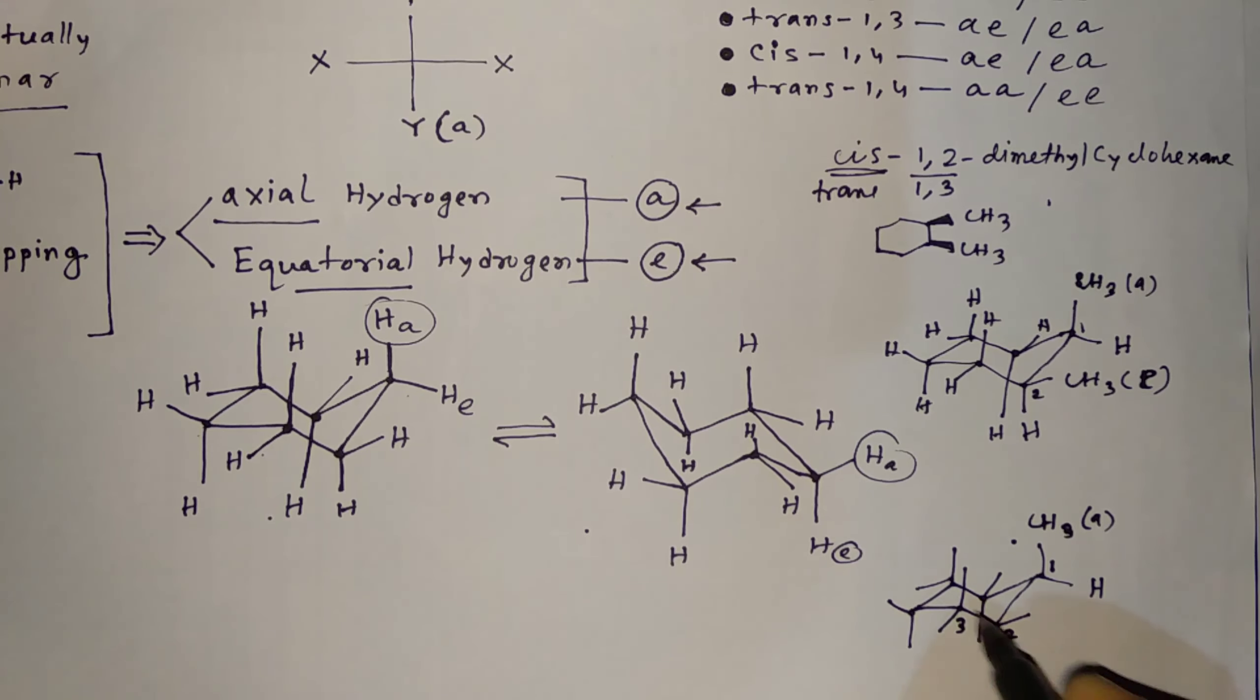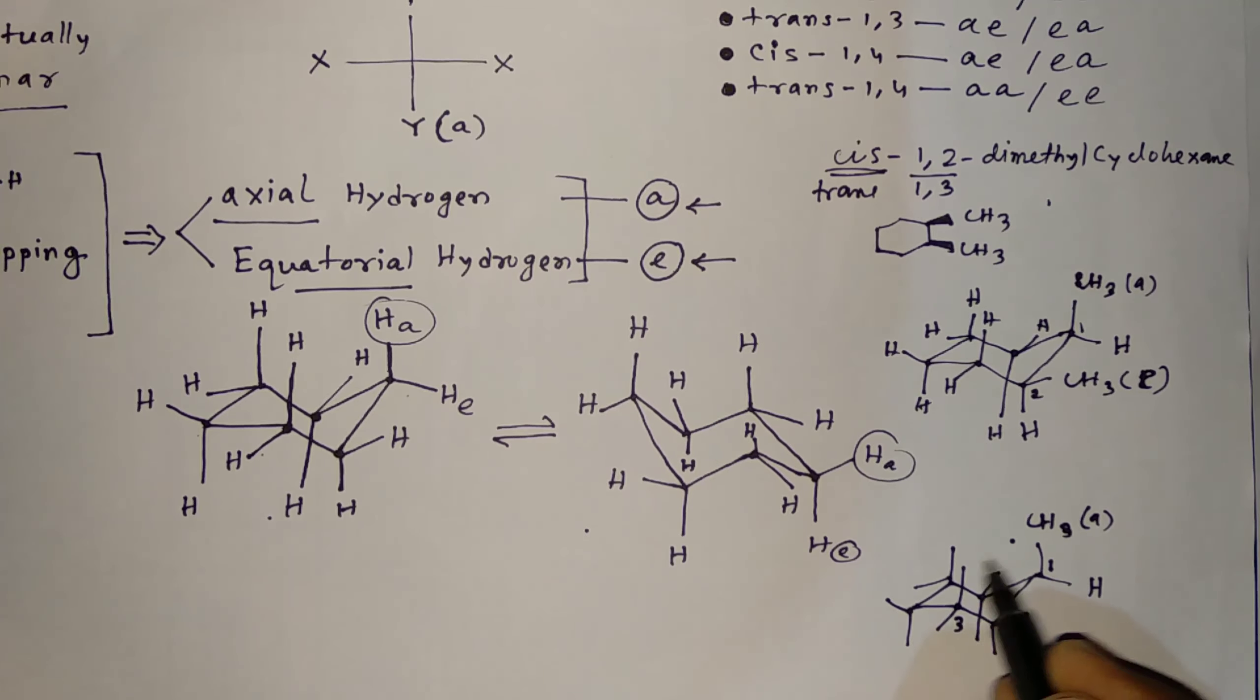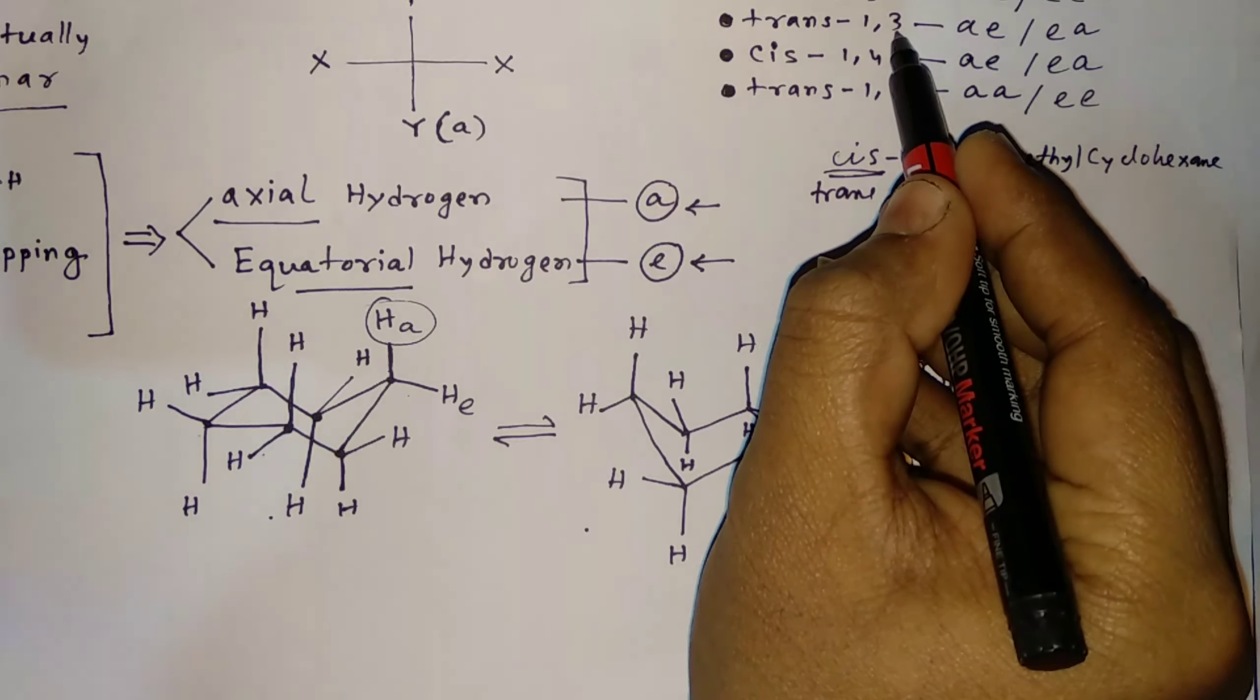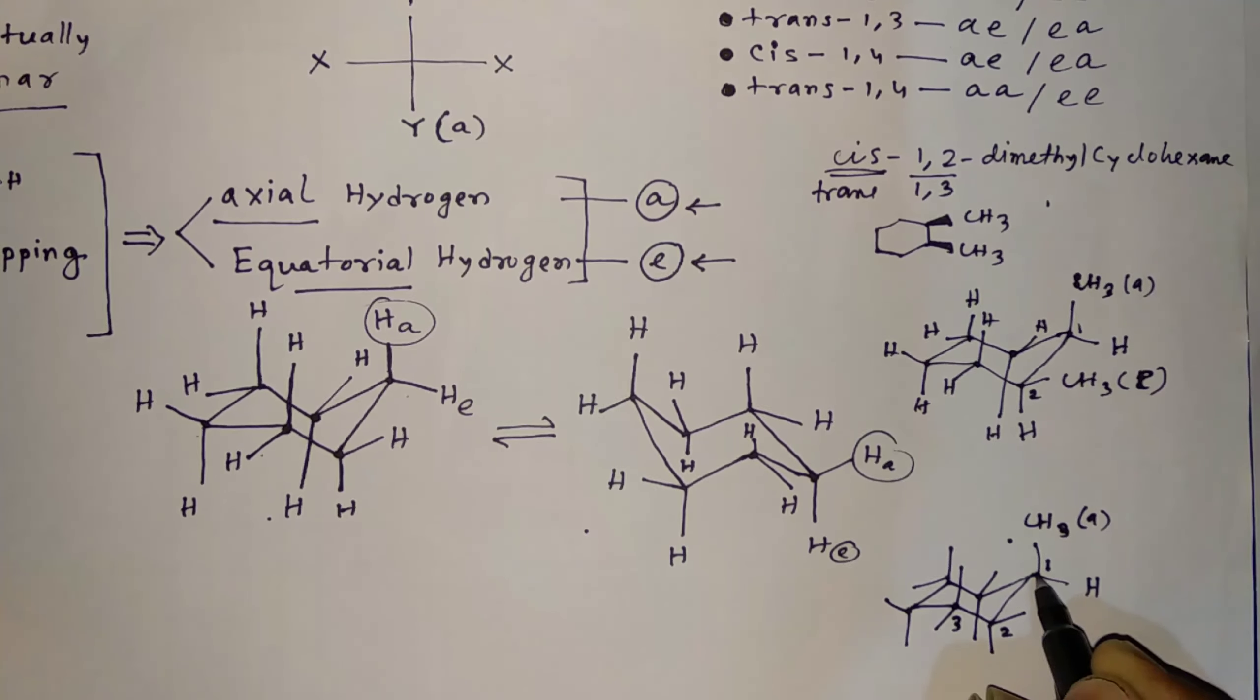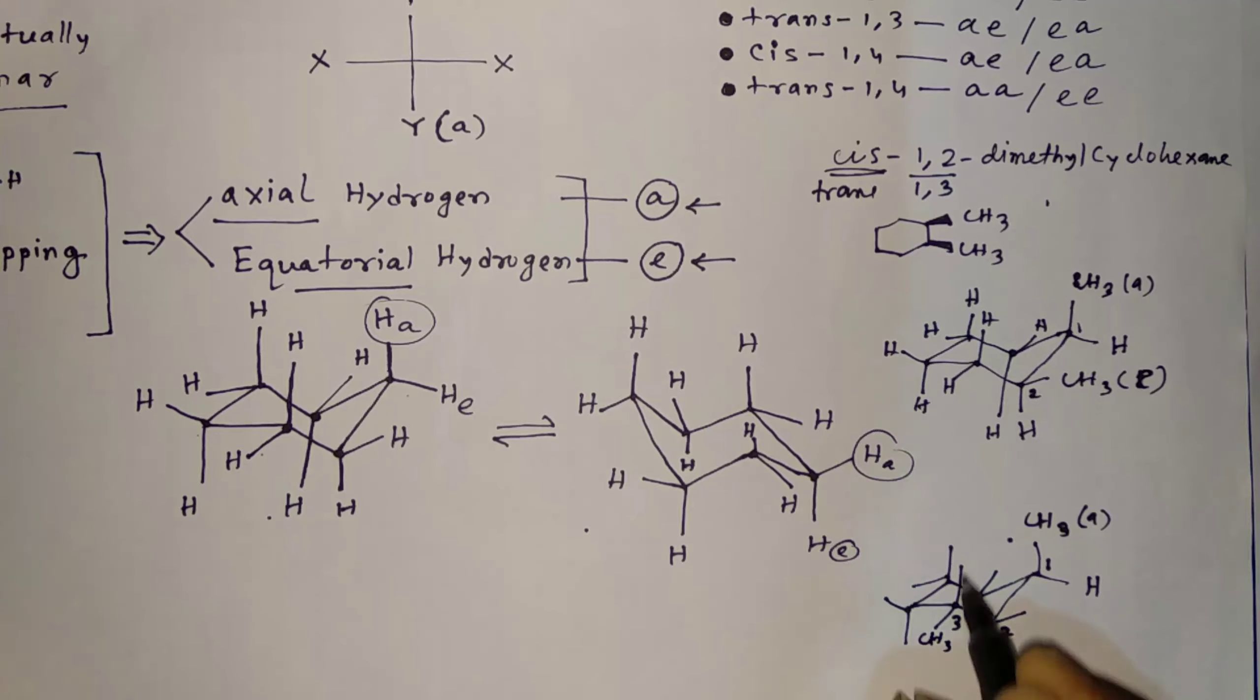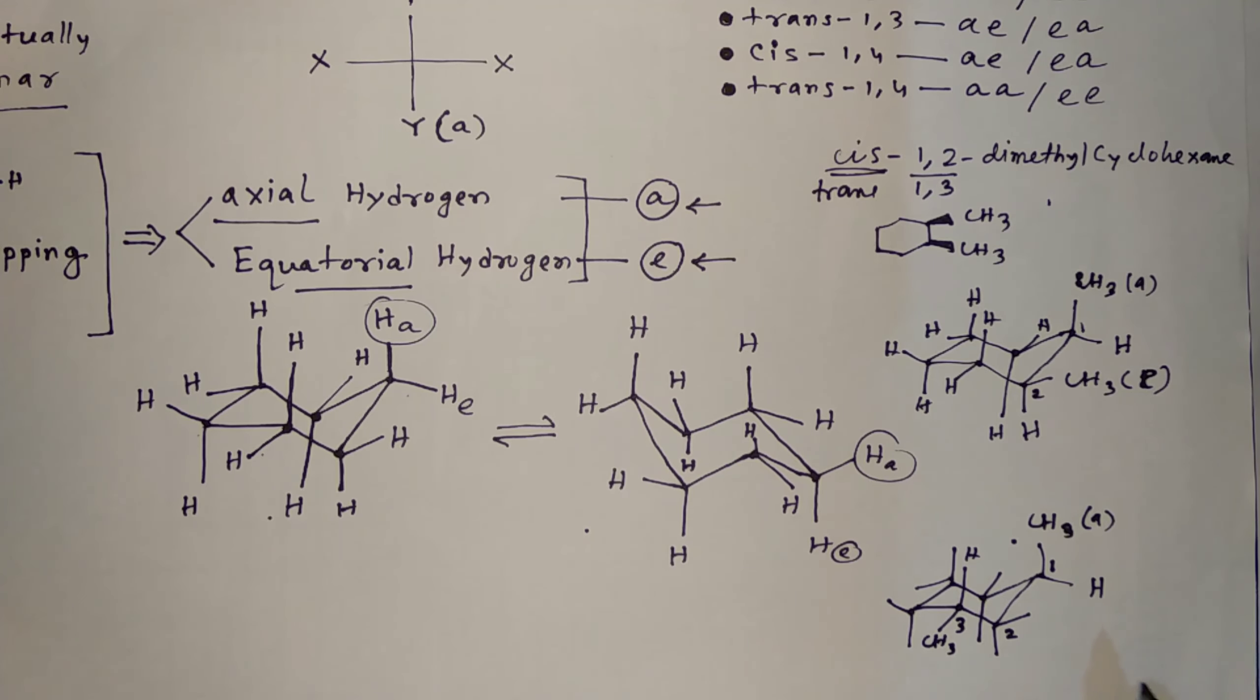So if you give this as A, I am ignoring the hydrogen, don't think that only methyl group is present. So 1 and 3, this system. So here also, axial and this is equatorial. So here also, this is axial bond, this is equatorial bond. So here is axial, this is equatorial. And so this is TRANS-1,3 system.